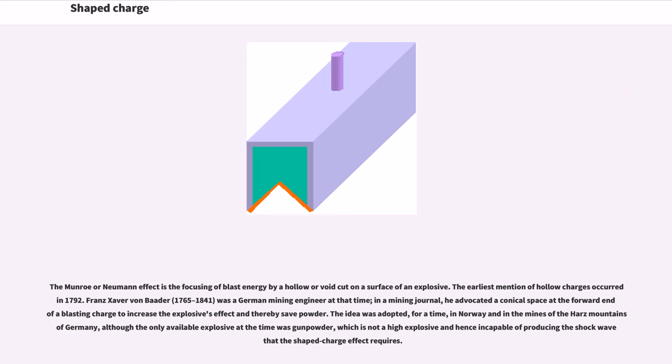The Monroe or Newman effect is the focusing of blast energy by a hollow or void cut on a surface of an explosive. The earliest mention of hollow charges occurred in 1792. Franz Xaver von Baader, a German mining engineer at that time, advocated a conical space at the forward end of a blasting charge to increase the explosive's effect and thereby save powder. The idea was adopted for a time in Norway and in the mines of the Harz Mountains of Germany, although the only available explosive at the time was gunpowder, which is not a high explosive and hence incapable of producing the shock wave that the shape charge effect requires.